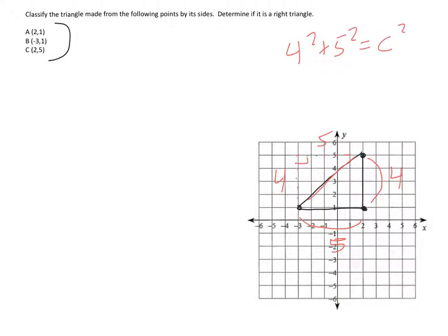So C is the square root of 41, which can't be reduced. It's a prime number.